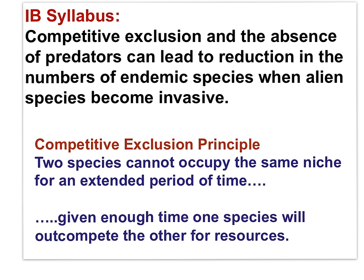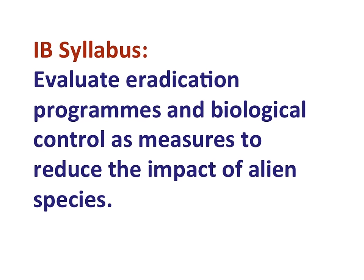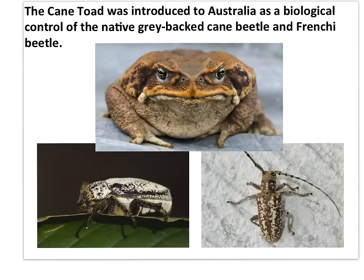Invasive species cause a decline in endemic species because of competitive exclusion. Two species cannot occupy the same niche for an extended period of time; given enough time, one species will out-compete the other for resources. Evaluating biological control as a measure to reduce the impact of an alien species: too often, invasive species were originally introduced as a form of biological control of another pest species. The cane toad was introduced to Australia in an attempt to control the native gray-backed cane beetle and the Frenchie beetle.